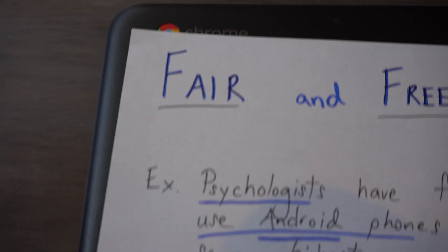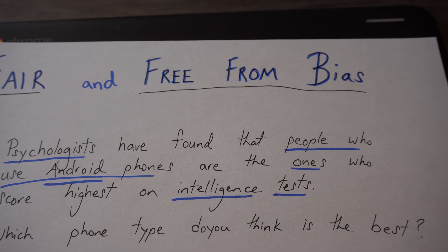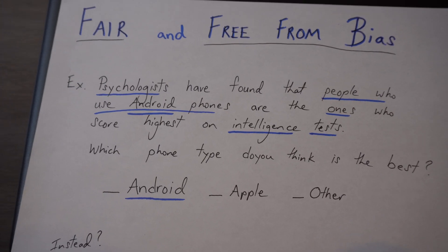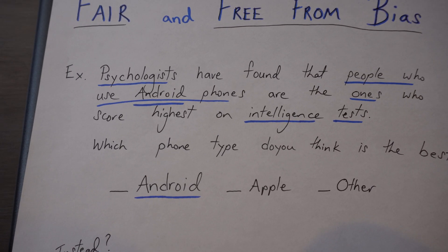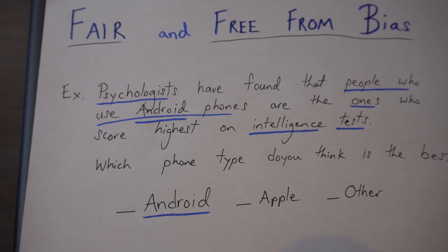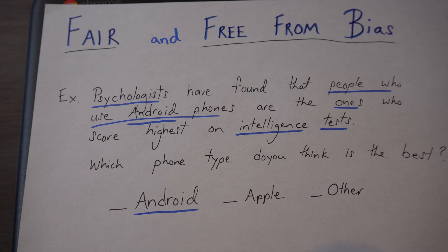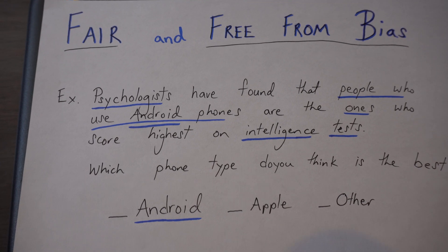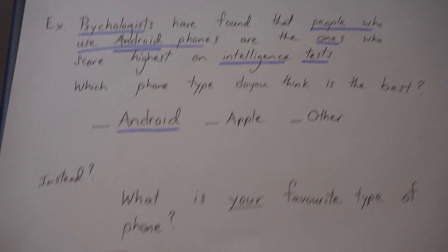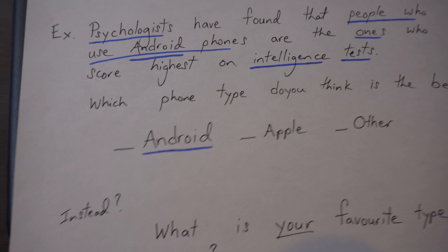Lastly, we want to make sure the questionnaire is fair and free from bias. Bias exists when something makes you think a certain way. For example: 'Psychologists have found that people who use Android phones are the ones who score highest on intelligence tests. Which phone type do you think is the best?'